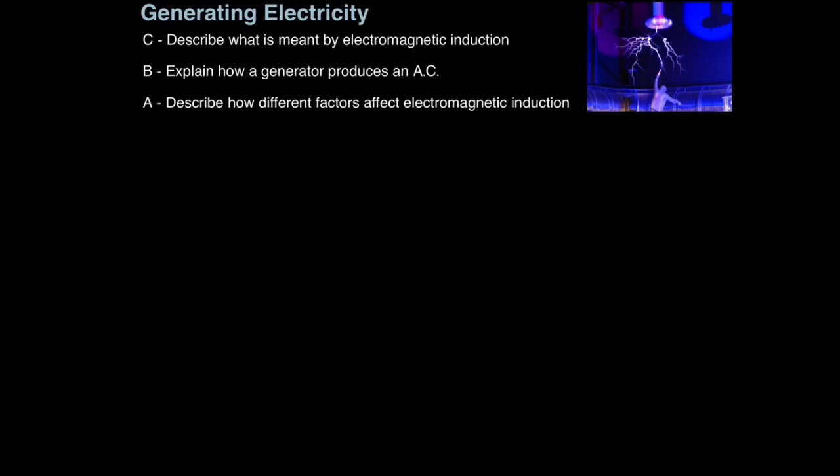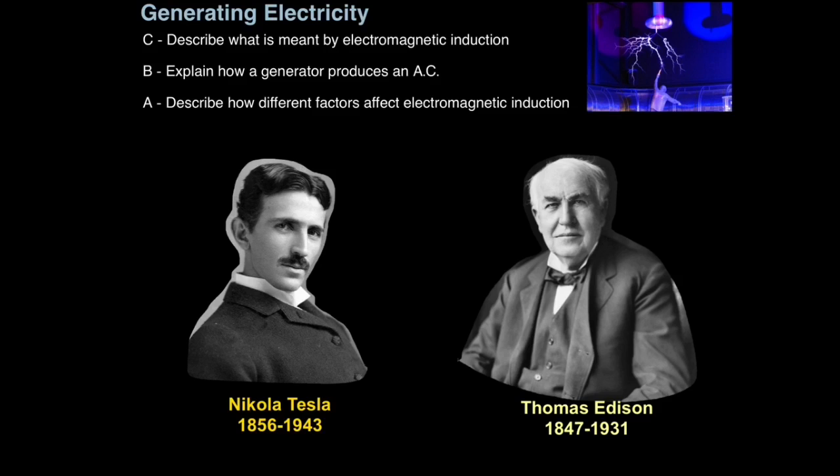The story of how electricity made its way to our homes is fueled by one of the most bitter rivalries in the scientific world, namely the rivalry between Nikola Tesla and Thomas Edison. Thomas Edison, co-inventor of the light bulb, was extremely good at raising the profile of his public image.